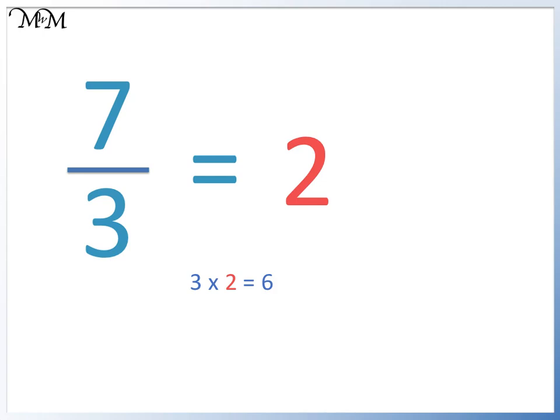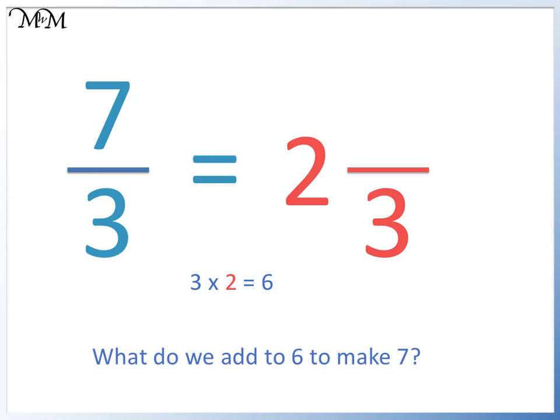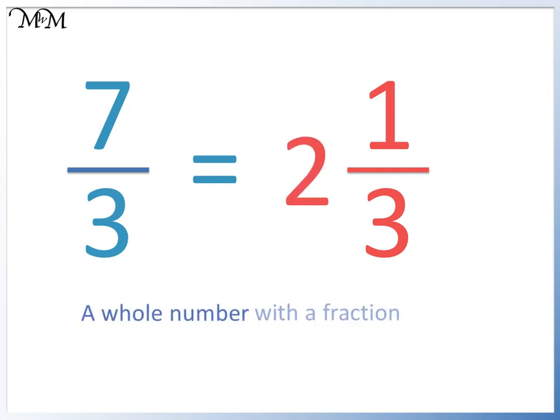Our denominator is 3. So we will also have our answer in thirds. How much more do we need to add to 6 to make 7? 6 plus 1 equals 7. So we have 1 more third. A whole number with a fraction is known as a mixed fraction.